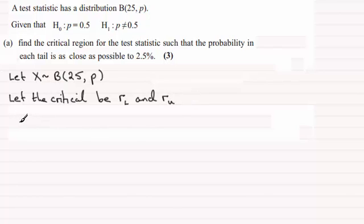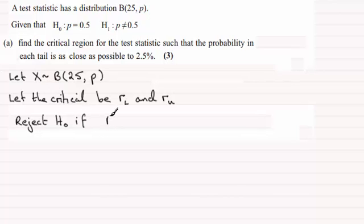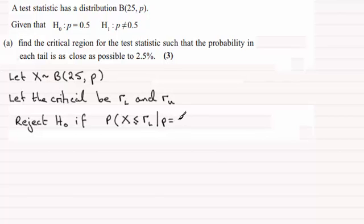Whenever I'm doing hypothesis testing I always put down something along these lines: I'm going to reject the null hypothesis if the probability that X is less than or equal to the lower critical value RL, given the null hypothesis is true (P equals 0.5), turns out to be approximately 0.025 — that's two and a half percent.